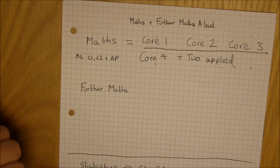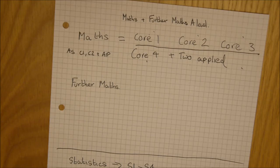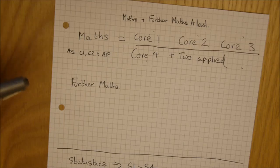So the two applied can be any units in particular, there's not a link, but they have to be consecutive. So you can do M1, M2, you can do S1, S2, but you couldn't do S1 and S3. That would not be permitted.